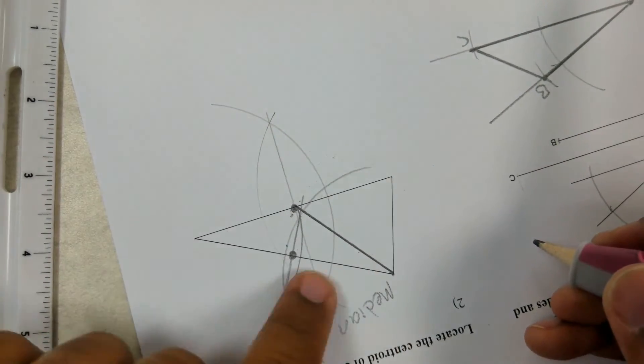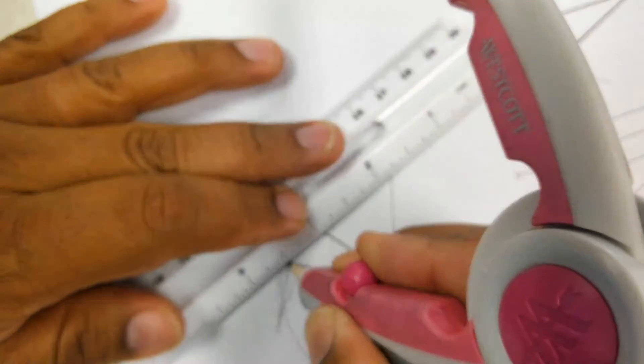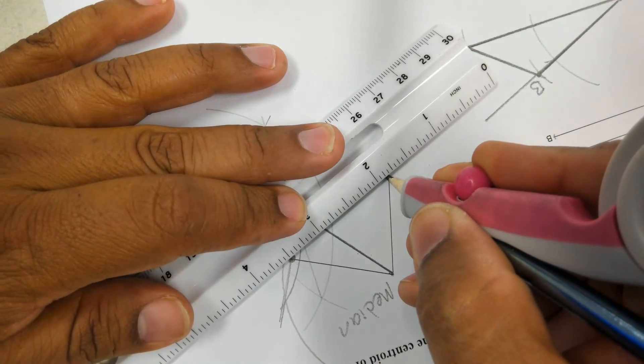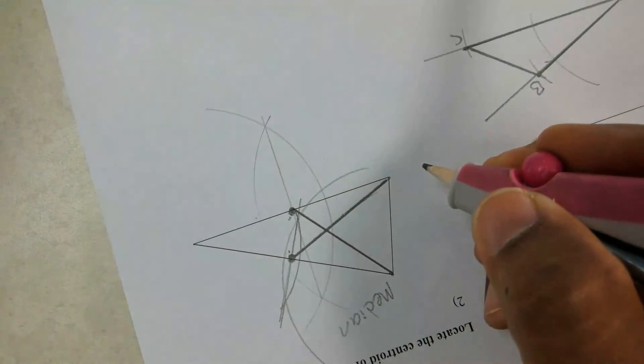Connect my two intersections, I find my midpoint again. From this segment, I found the midpoint. Let me connect my midpoint with my opposite corner. I just found another median.